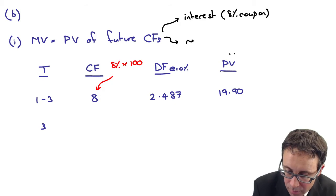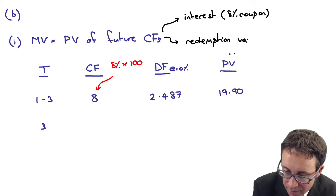2.487 times 8, 19.896 or 19.90. So that's looking at the present value of the interest. So what you've got there, the future cash flows are the interest, which is based upon the 8% coupon, and the redemption value.